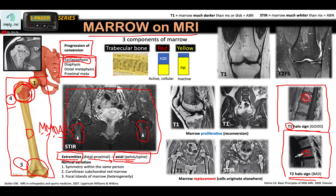The last thing to discuss is normal variation. There is some variation from person to person, but within the same person there should be symmetry. So if you have an abnormality on one side, check if it is present on the other side — if it is, it might just be normal variation. Number two: there is curvilinear subchondral red marrow present even in adults. In this T1-weighted image, there is a little bit of red marrow in the subchondral region — not to be mistaken as abnormal marrow or avascular necrosis.